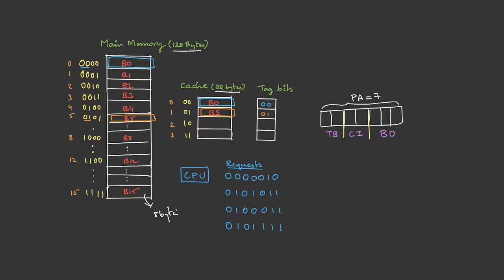Whenever the CPU finds the data inside the cache it is called a cache hit; if not, it's a miss. For the first request it is a hit. For the second request, the first 3 bits are block offset, the next 2 bits are the cache index — here it is 01, meaning line 1. The CPU goes to the tag directory for line 1 and compares the tags. In this case they match, so the data is available in the cache. Using the block offset it retrieves the exact byte. The second request is also a hit.